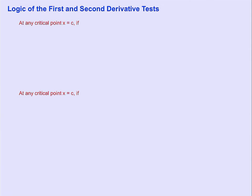At any critical point x equals c, if f prime of x switches from positive